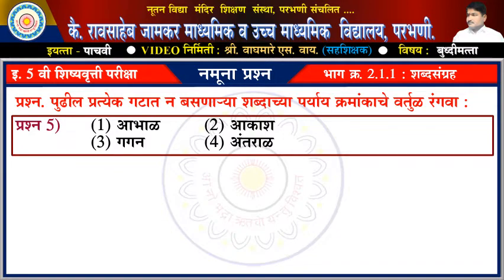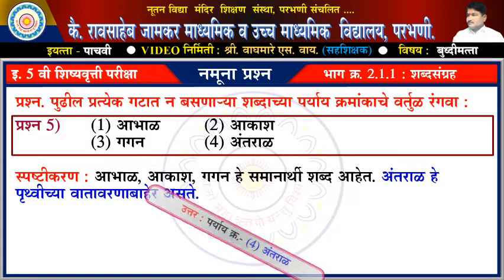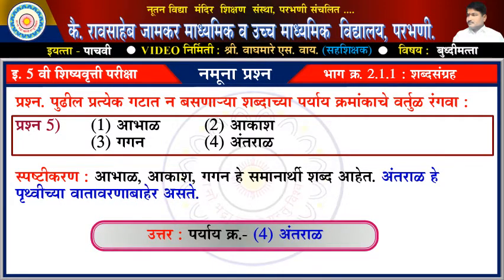પ્રશ્ન પાચવા: એક આભાળ, 2 આકાશ, 3 ગગણ, 4 અંતરાળ. સ્પષ્ટિકરણ: આભાળ, આકાશ, ગગણ - હે સમાનાર્થી શબ્દ આહેત, તર અંતરાળ - હે પ્રૃથ્વીચ્યા વાતાવરણા બાહેર. ઉત્તર: પર્યાય ક્રમાંક ચાર - અંતરાળ.